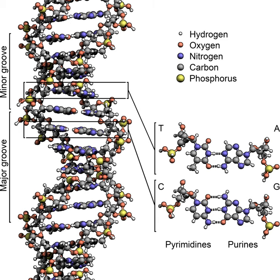DNA contains the genetic information that allows living things to function, grow, and reproduce. This information is held in the sequence of pieces of DNA called genes. Genetic information in genes is transmitted through complementary base pairing. For example, when a cell uses the information in a gene, the DNA sequence is copied into a complementary RNA sequence in a process called transcription. Usually, this RNA copy is then used to make a matching protein sequence in a process called translation. Alternatively, a cell may simply copy its genetic information in a process called DNA replication.